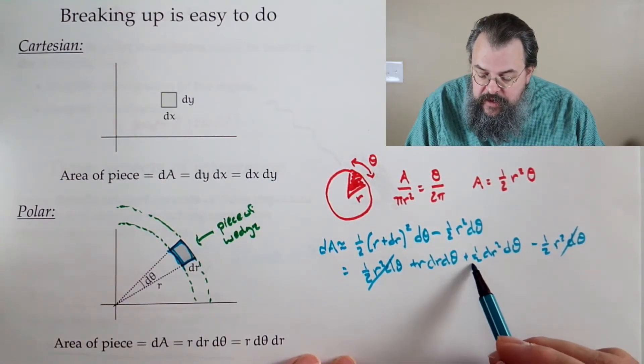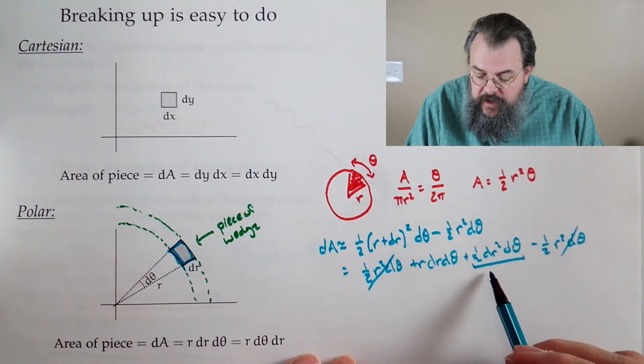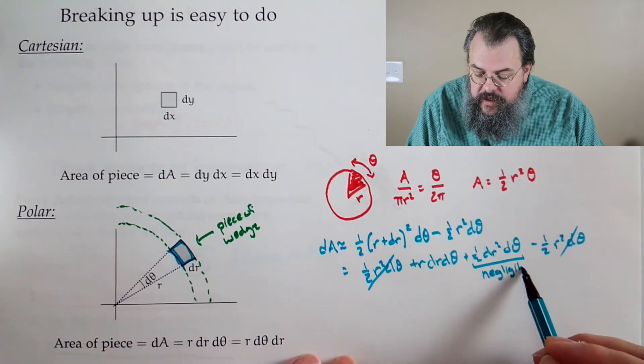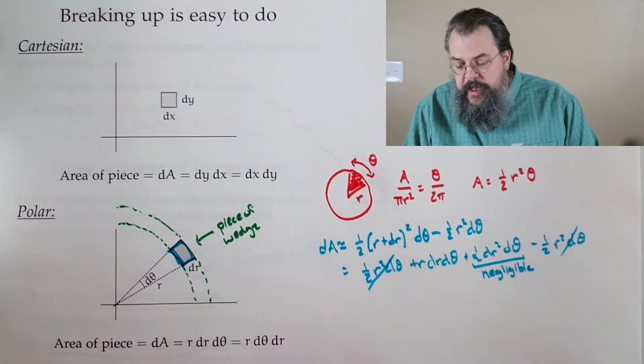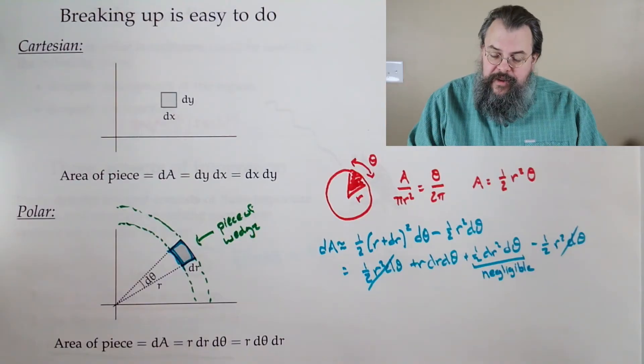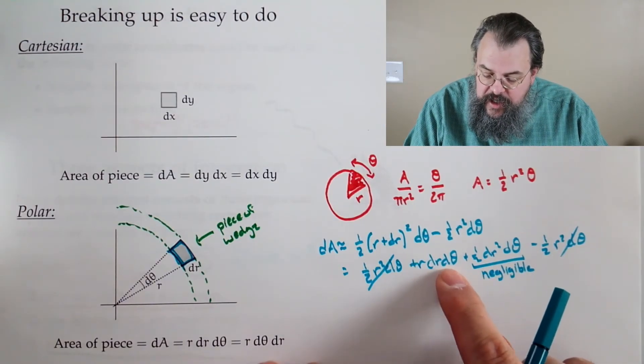And now this is so small. We say, look, it's negligible. In other words, if we could spell the word negligible, we can ignore it because look at it. This one has a dr and a d theta. This one has an extra dr. dr is already small. So when I put in another dr it's super, super small, so small, look, inconsequential, we can ignore it.